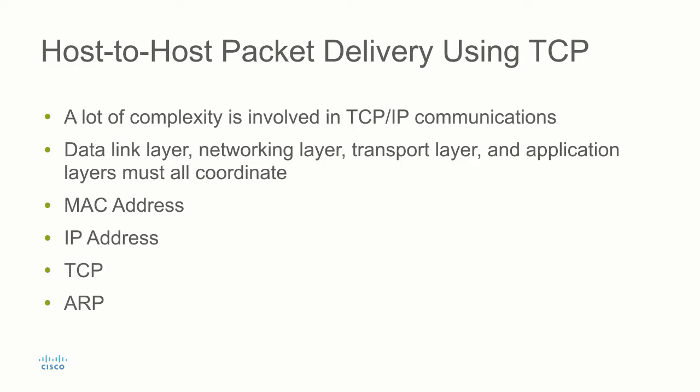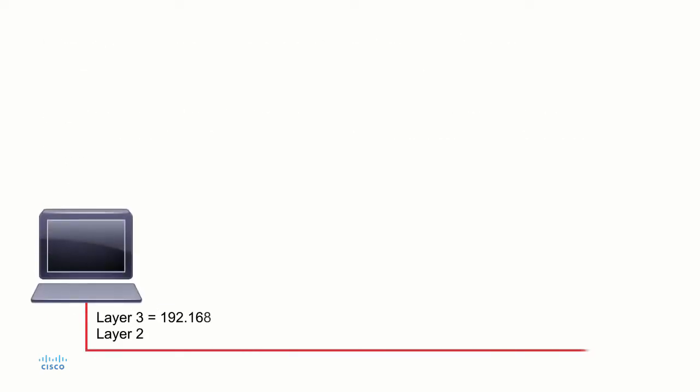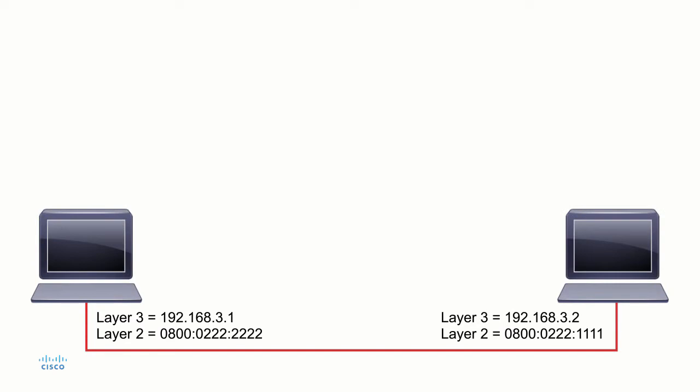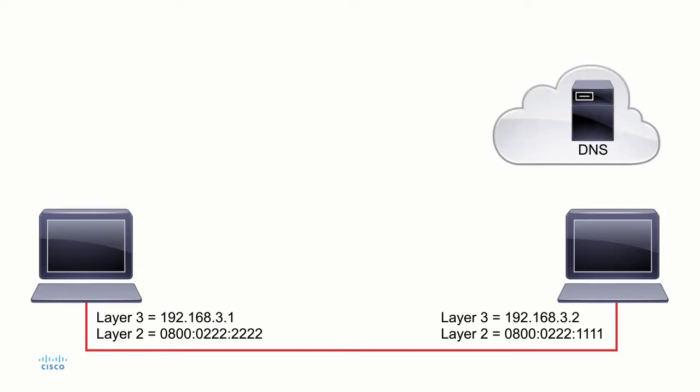Let's take a look at the host-to-host packet delivery process using TCP and simplify this to some degree. As we go through this, we're going to see exactly how data is transferred on a network and how two end systems can coordinate this packet delivery. We're going to begin with two computers on the network that want to talk to each other, and we're going to have a DNS server that will provide some resolution for us.